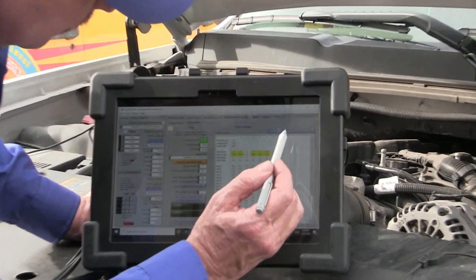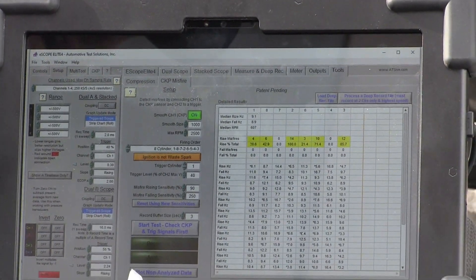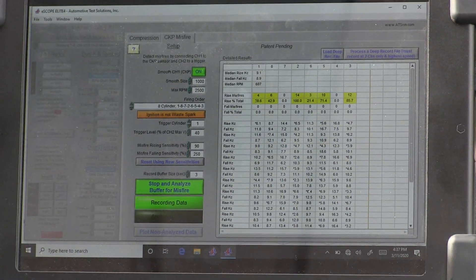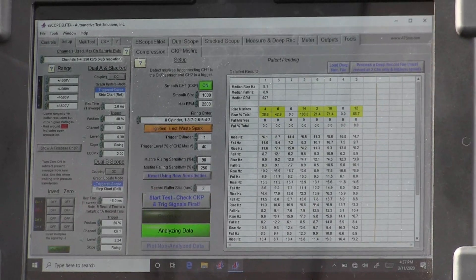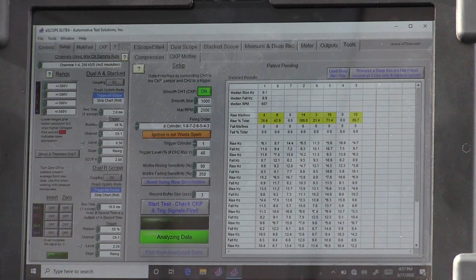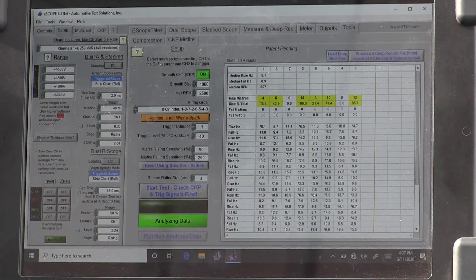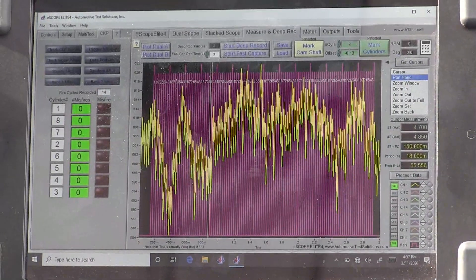So what we want to do is go over to the tools, and we're going to run this test. We're just going to start it, and it's running gathering data. Now we want to test the data, we're going to shut that off, and we're going to let the machine process that data to see if we have any misfires currently.